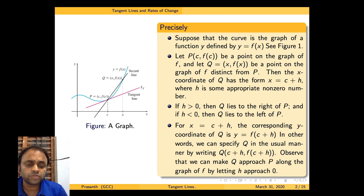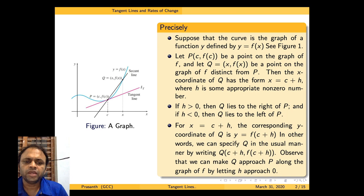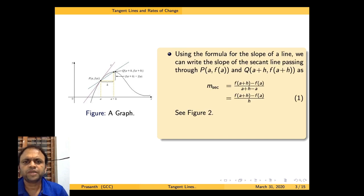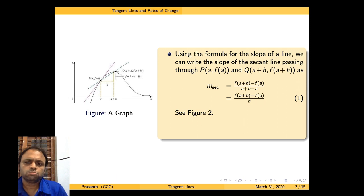If we assume that h tends to 0, then the point Q will approach the point P along the graph of f. As I told you, you know what is the equation of a line which passes through two points.